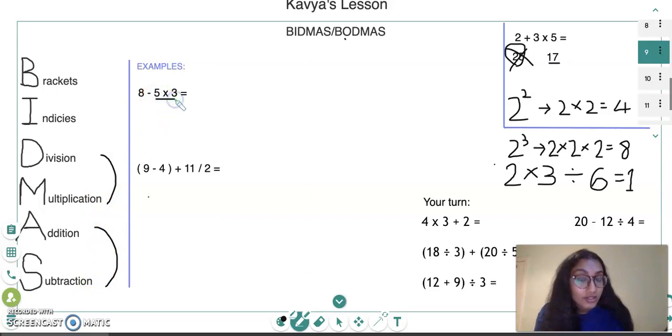You can see multiplication comes before subtraction, so we actually have to do this part first. I'm going to rewrite this question again. I'm going to do 8 take away, and 5 times 3 equals 15, so I'm just writing 15.